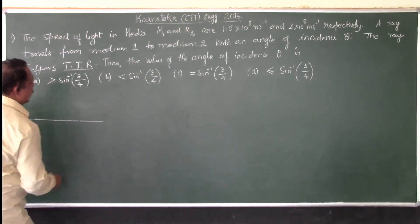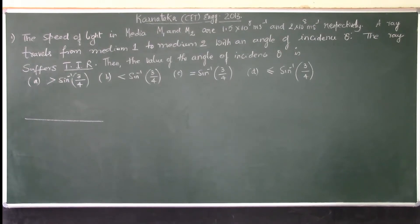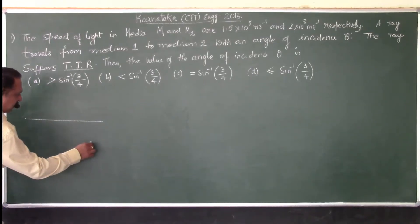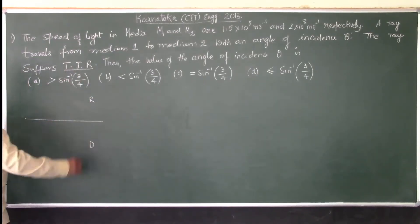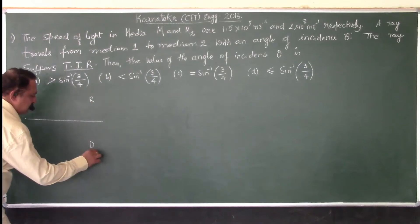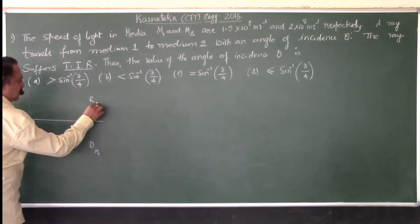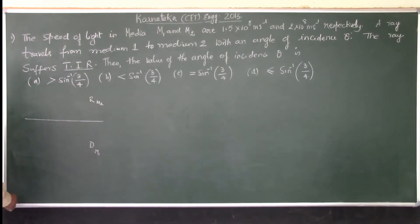So a ray of light has traveled from medium 1 to medium 2 and it has undergone total internal reflection. Therefore, it should have traveled from denser medium to rarer medium. So, m1 is denser and m2 is rarer.